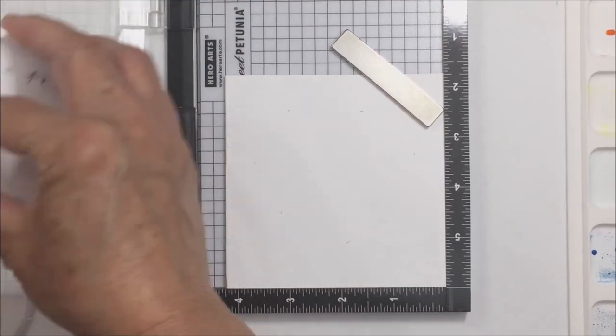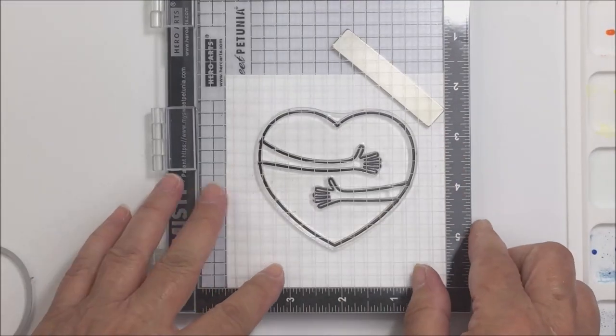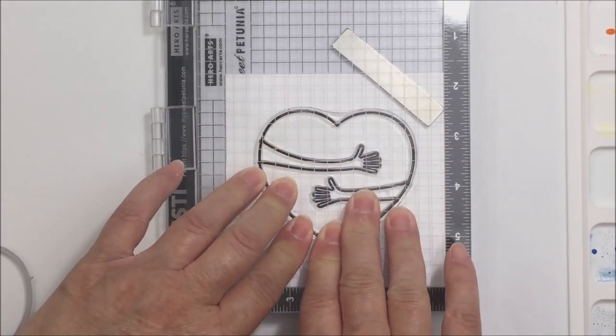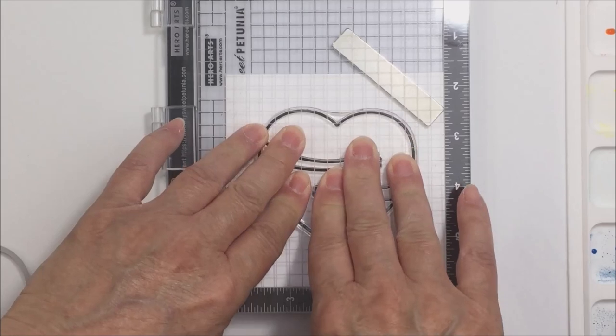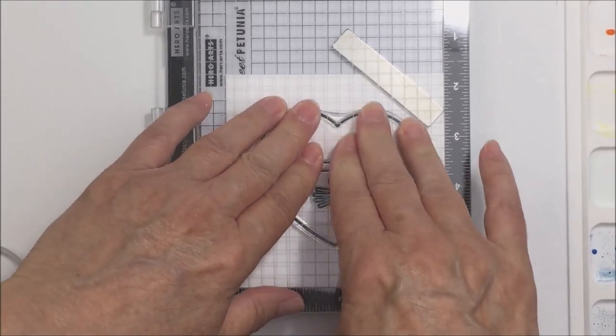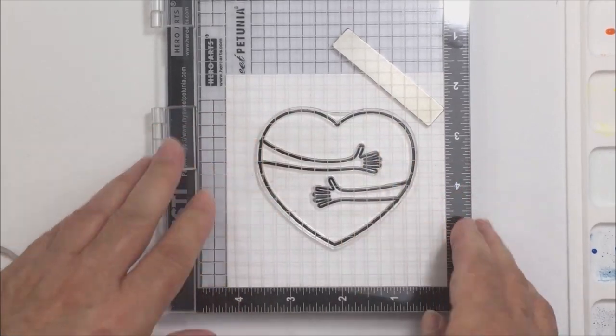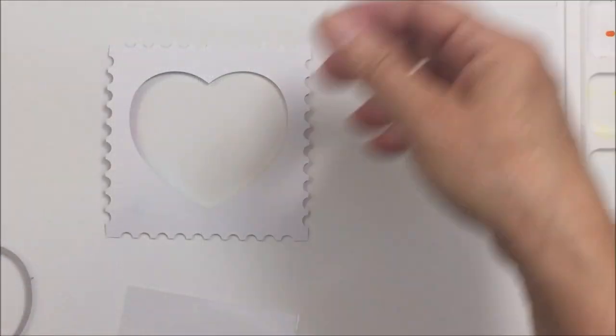I'm just going to take some VersaFine Onyx Black ink and stamp out that inked up image onto the area there where I know that my rainbow pattern paper, or I should say watercolor paper, is going to fit over top perfectly. So now that I've got that all stamped out, I'm going to take my tape runner.